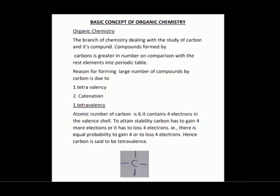Reasons for forming large numbers of compounds by carbon are: 1. Tetravalency and 2. Catenation. For tetravalency: Carbon's atomic number is 6, so its electronic configuration is K2, L4. In the valence shell, the outermost shell, to attain stability according to the octet rule, an element needs 8 electrons in the valence shell.